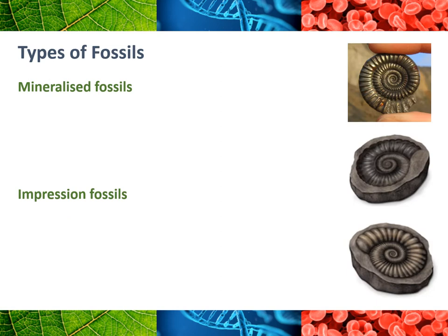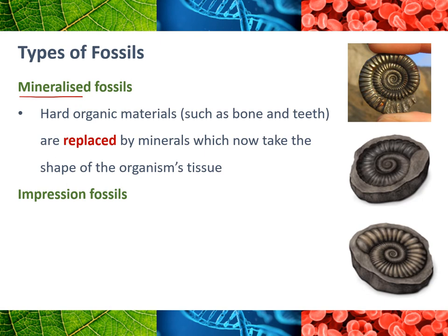There are a few different types of fossils. The ones I've just described are what we call mineralized fossils — they're the main ones talked about and the big exciting finds for paleontologists. A mineralized fossil is when hard organic materials — so bones or teeth — are replaced by minerals as we just spoke about, and it ends up taking the shape of an organism's tissue. The perfect example is fossilized bone that basically looks exactly like a bone but is pretty much made of rock, because that mineral has replaced the bone imprint.